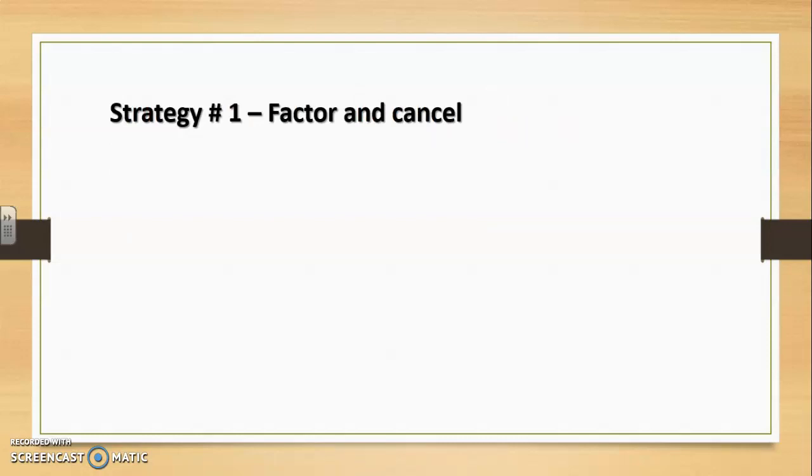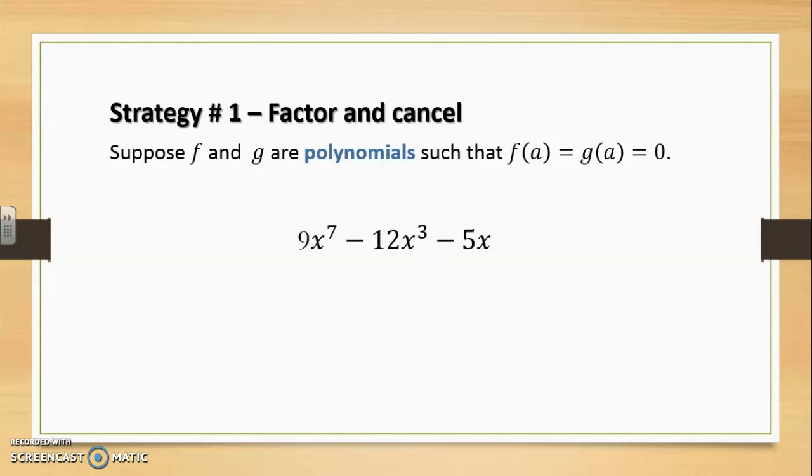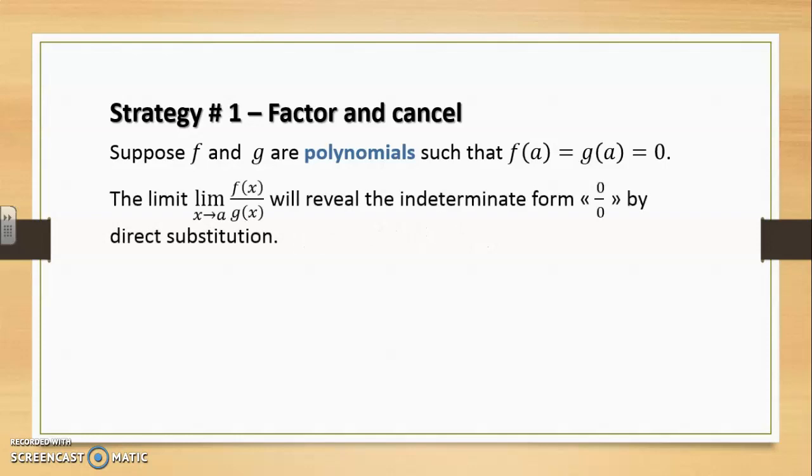So strategy number one will be for us to use factoring and cancelling. Suppose f and g are polynomials such that f and g calculated at a will give 0. By polynomials, remember we're talking about expressions that involve powers of x added or subtracted to one another where the powers are positive integer values. Now the limit as x approaches a of the quotient f(x) over g(x) will reveal the indeterminate form 0 over 0 by direct substitution if in fact f and g at a are 0.